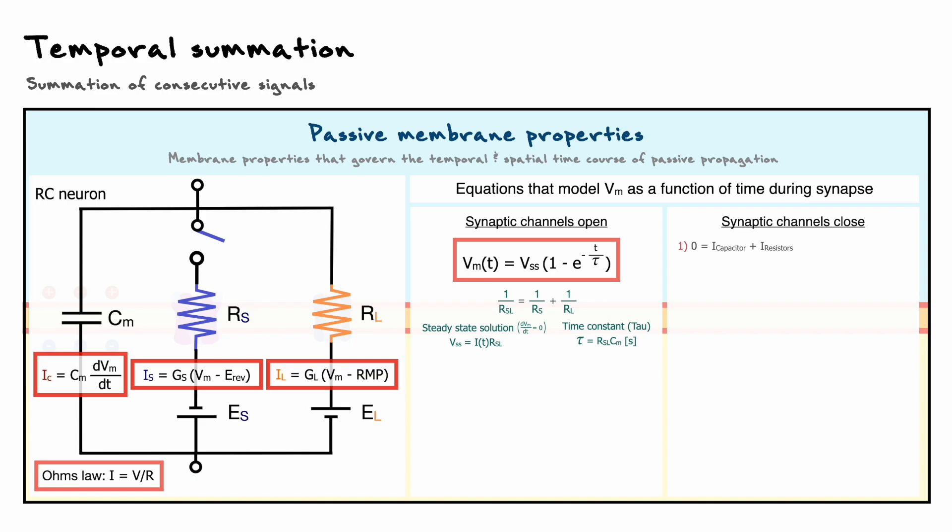Another important distinction is that since the synaptic channels are now closed, we only have to take into consideration the resistance of the leak channels, RL. From there, the derivation follows the same steps as before and yields us this equation.